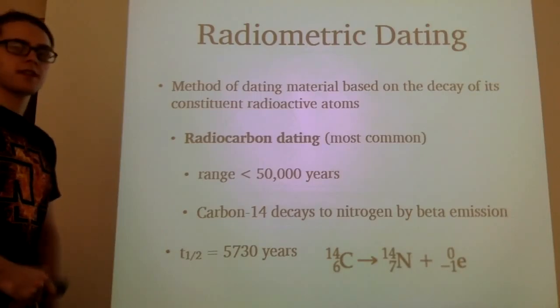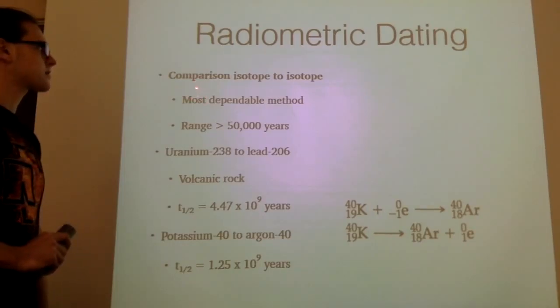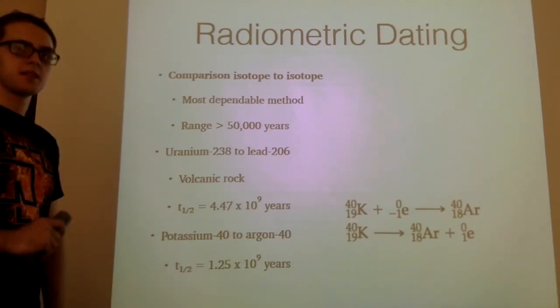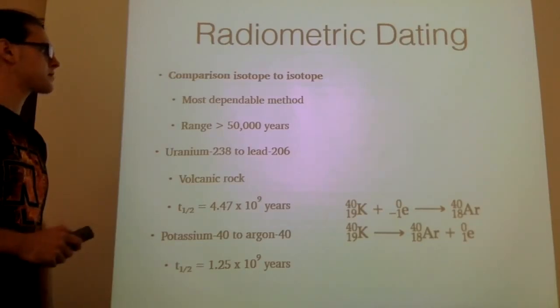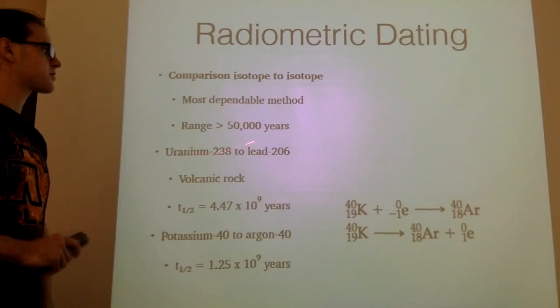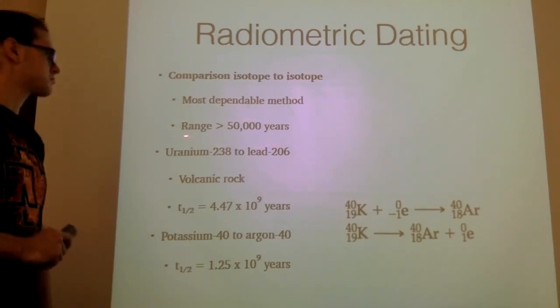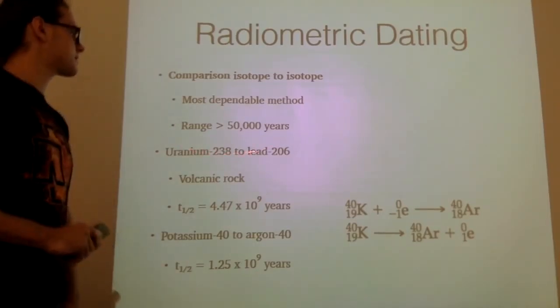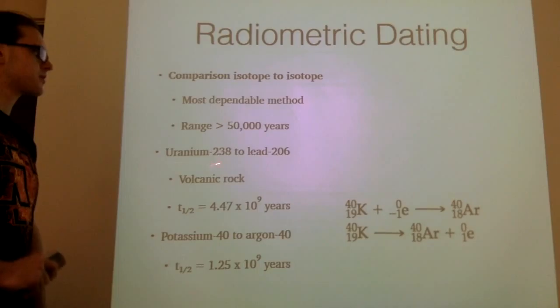Building more on radiometric dating, we can use it for another method, a method called comparison, which is comparison of isotope to isotope. It's a much more dependable method, as it has a larger range to work from, as it can be dated back farther.